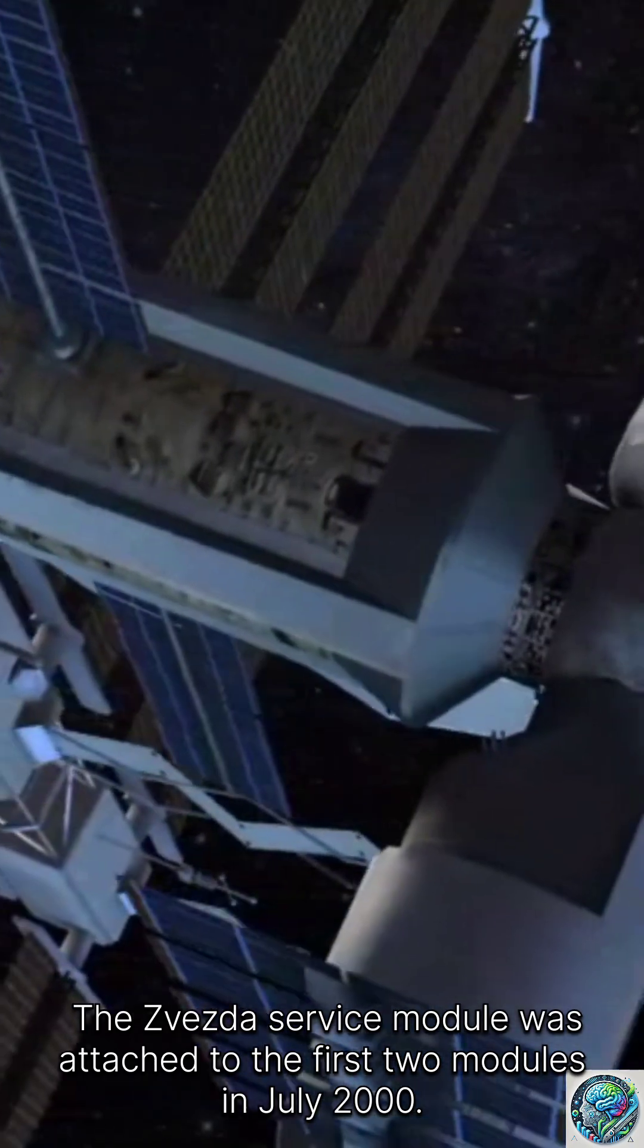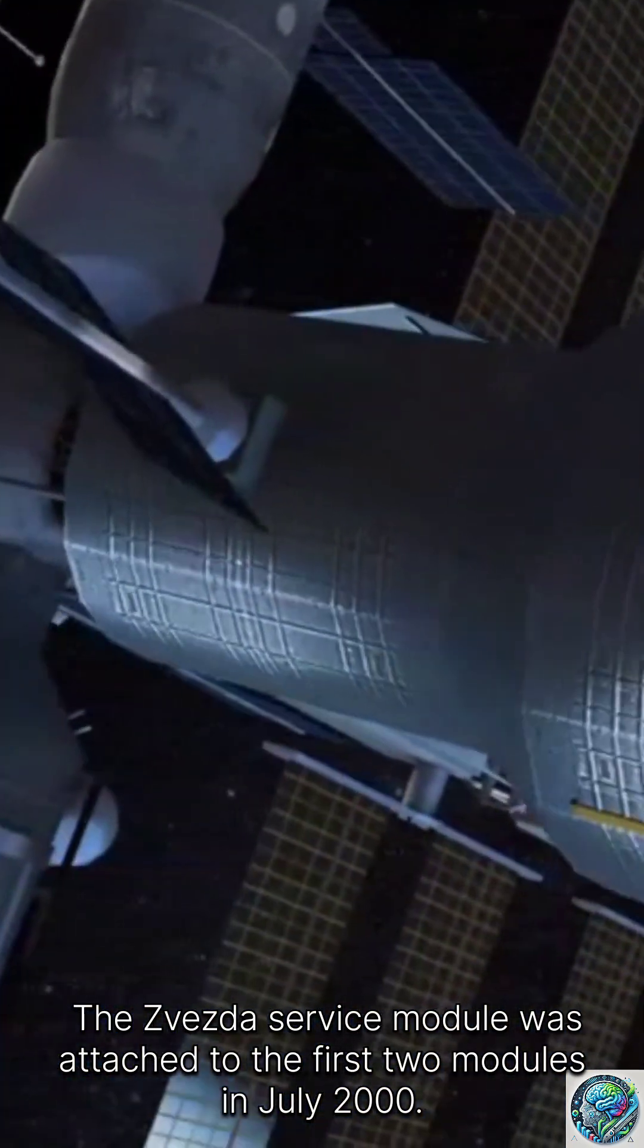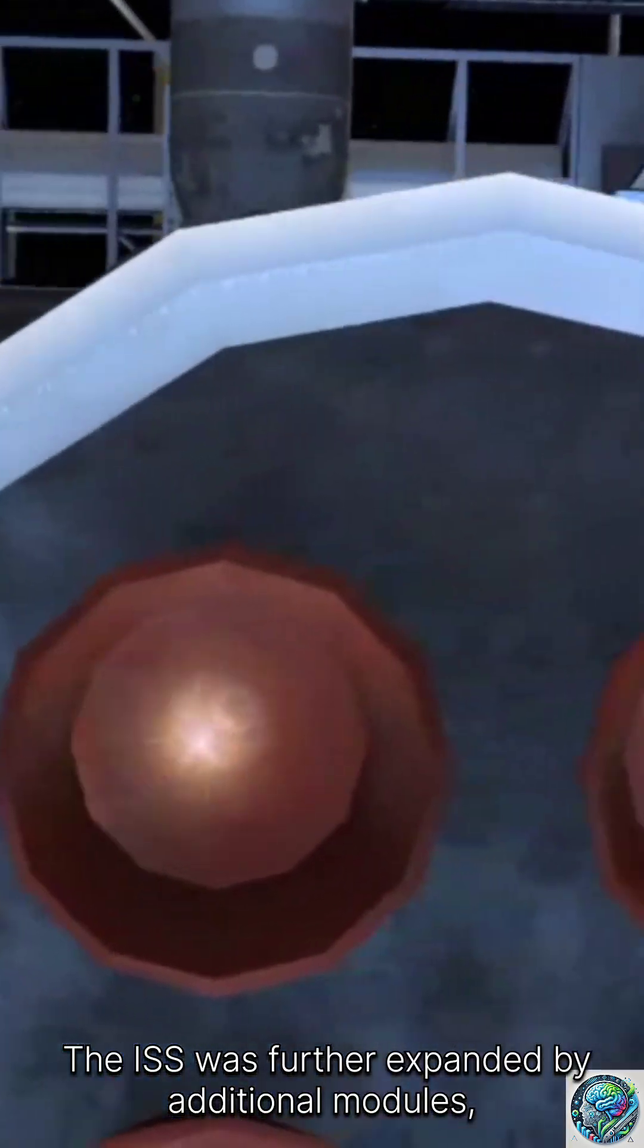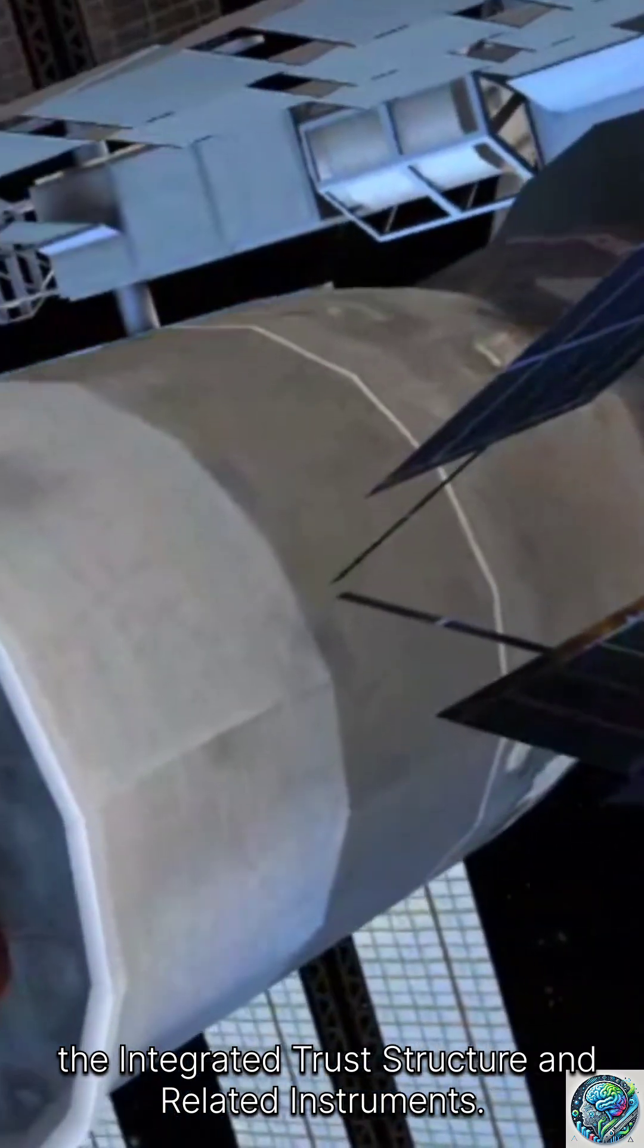The Zvezda service module was attached to the first two modules in July 2000. The ISS was further expanded by additional modules, the integrated truss structure and related instruments.